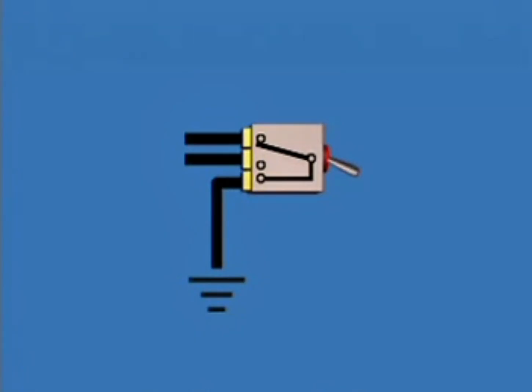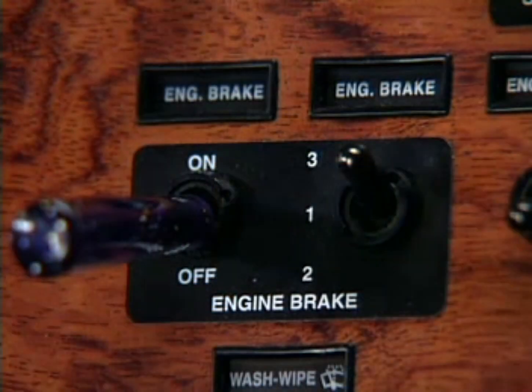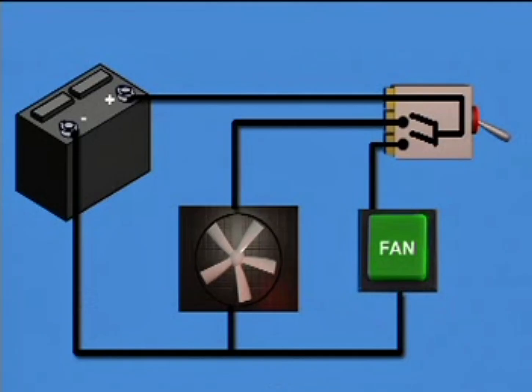A single-pole double-throw switch has three positions: two closed and one open. This type of switch completes one of two circuit paths. A double-throw switch cannot make contact with both circuits at the same time. A common single-pole double-throw switch used on this engine control system is the engine brake switch.